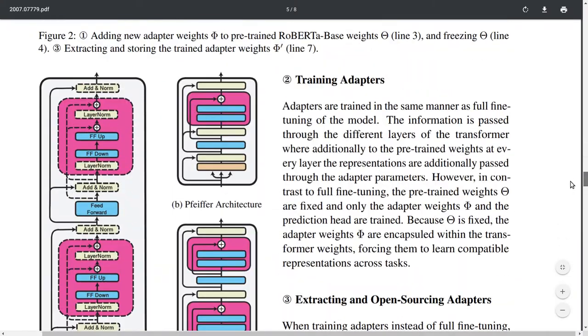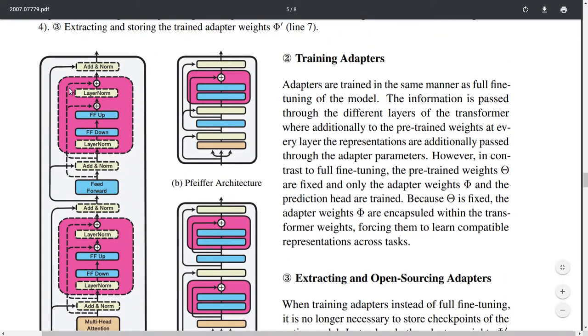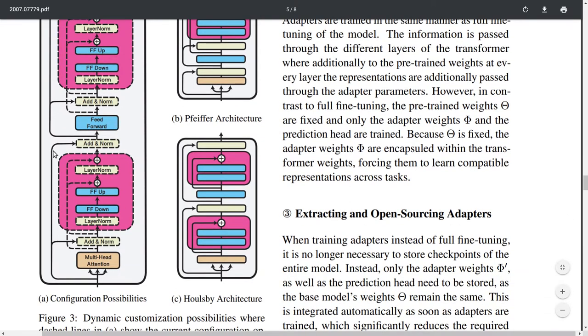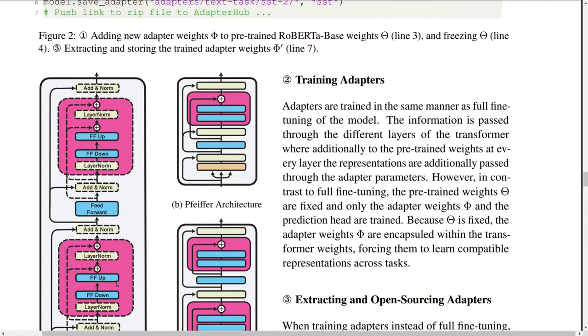This is illustrated in this figure here. You have some transformer architecture with multi-head attention layers, layer norm, feed-forward layers and so on. Adapter models plug in a couple of small feed-forward layers within those layers for each transformer layer. Then you fine-tune only those layers and freeze the other layers.